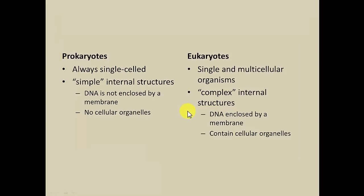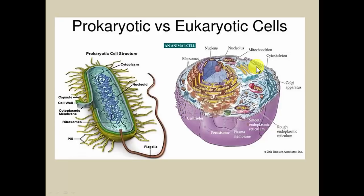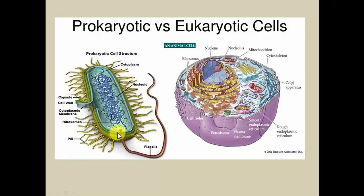Organelles are the other structures around the DNA — for example, the mitochondrion, the cytoskeleton, Golgi apparatus, peroxisome, and centrioles. The word organelle is derived from the word 'organ.' You can think of the cell membrane as kind of like your skin, and inside we have the fluid, kind of like your blood or body fluid.